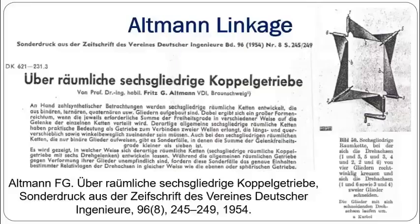In 1954, Fritz Altman published a paper on spatial six-link mechanisms. This mechanism you see in the picture is one of those mechanisms, which is known as the Altman linkage today. Although the mechanism has a very high level of symmetrical properties and it resembles a rectangle in the deployed form, it can fold into a shape where all links are collinear. So it is very suitable to be used in deployable structures. But it seems the linkage is not very well known, so until recently no one has used this linkage for deployable structures.